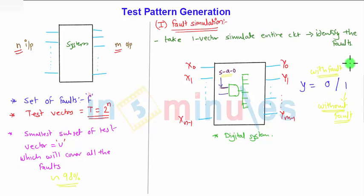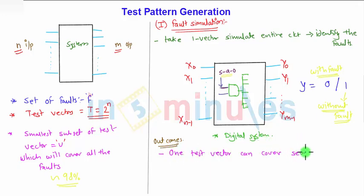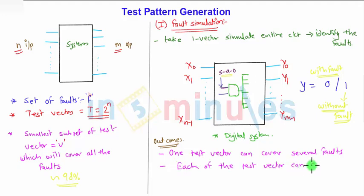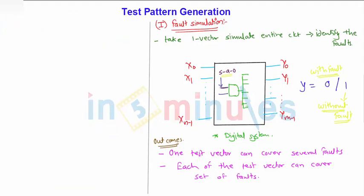From this fault simulation for the first vector, one test vector can find out the outcomes. The first outcome is that one test vector can cover several faults, or it might be possible that one test vector can detect only one fault. It might also be possible that one test vector can detect several faults. Hence, the second outcome is that each test vector can cover a set of faults.